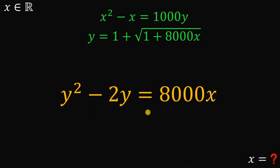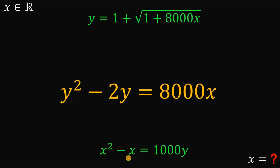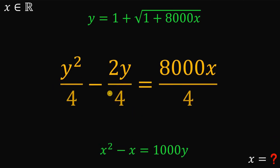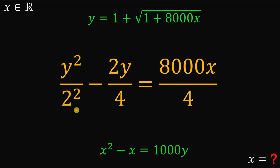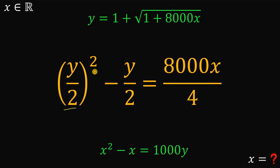This result is almost similar to our first equation x squared minus x equals 1,000y. We have y squared versus x squared, negative 2y versus negative x, and 8,000 versus 1,000. To make the equations match in form, we divide the equation y squared minus 2y equals 8,000x by 4. Since 4 is 2 squared, y squared over 2 squared becomes y over 2, all squared — this is our x squared equivalent. Then 2 divided by 4 gives y over 2, and 8,000 divided by 4 gives 2,000x.